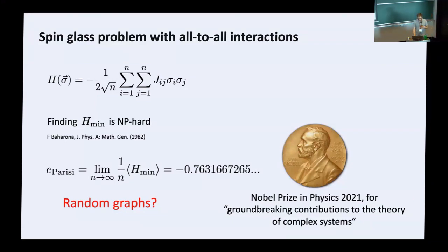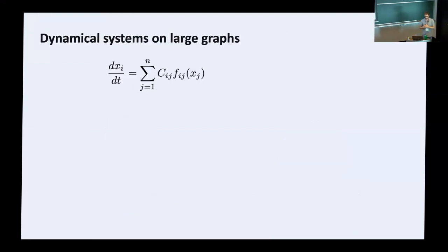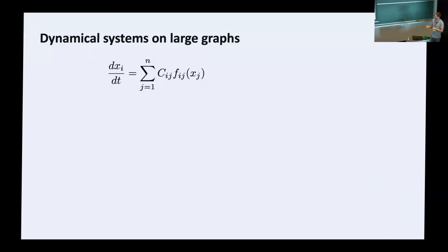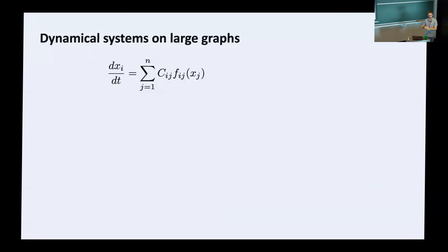Let's now go to dynamical systems as a second problem. For neural networks or ecosystems, you generally don't have a minimization of a cost function; instead you have a dynamical system with differential equations. Here, x_i is a variable representing the state of node i — for example, the population abundance of a species or the firing rate of a neuron. The equation tells you how x_i changes as a function of the network structure, with the right-hand side capturing the influence of neighboring nodes.